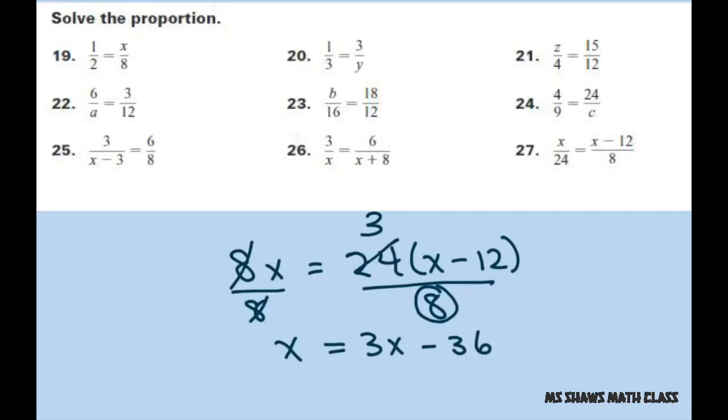If I subtract 3x from both sides, I get negative 2x equals negative 36. Divide both sides by negative 2. And you get x equals 18.